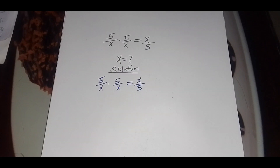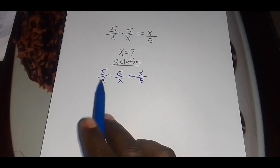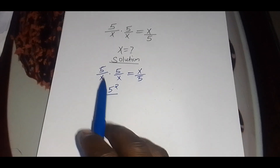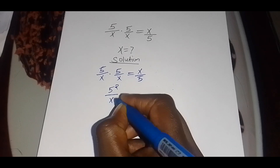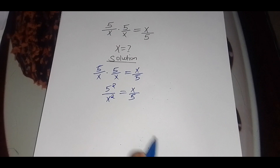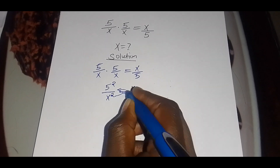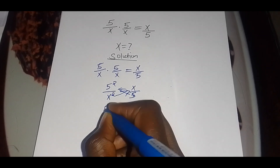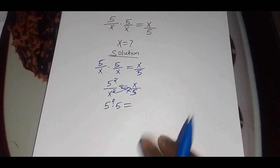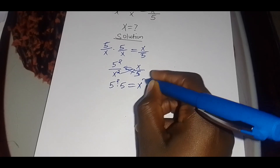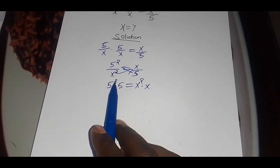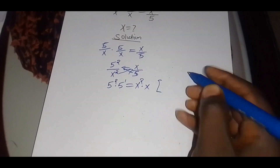So this is 5 times 5, which is 5 squared, divided by x times x, which is x squared, and this is equal to x divided by 5. We cross multiply, so we'll have 5 squared multiplied by 5, which is equal to x squared multiplied by x.